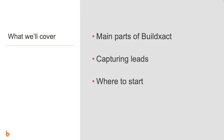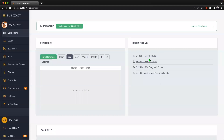In this video, we're going to look at how to actually start using the system. Specifically, we're going to look at the main parts of BuildExact. We'll talk a bit about capturing leads, and from there, we'll look at how to start to create an estimate. I want to give you a brief overview of the three key things that BuildExact does, as that'll really help shape our understanding of the layout of the system and set us up for this video as well as future videos.